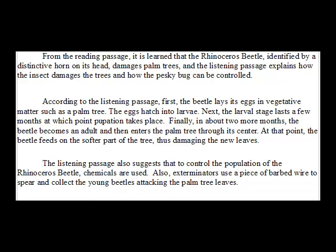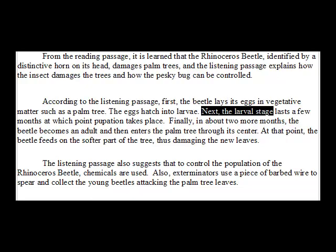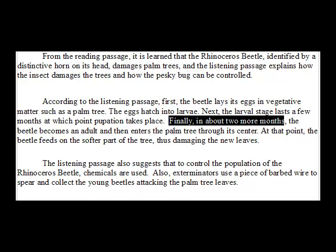Let's take a look at another characteristic: coherent, automatic expression of ideas. Coherent means using transition words like 'First, the beetle lays its eggs. Next, the larval stage lasts a few months. Finally, in about two more months, the beetle becomes an adult.' Using grammar and transition words in sequence connects everything together. It makes it efficient, automatic, and easy to understand. Part of your speaking goal is to try to sound as natural as you can. So the speech demonstrates good control of basic and complex grammar, which allows for coherent and automatic expression of ideas — the speaker sounds natural.